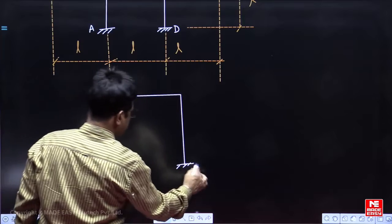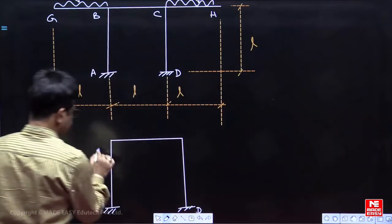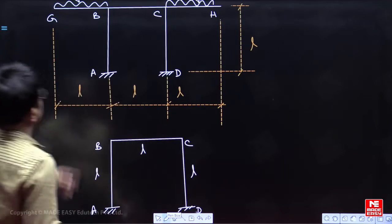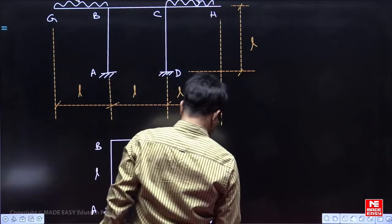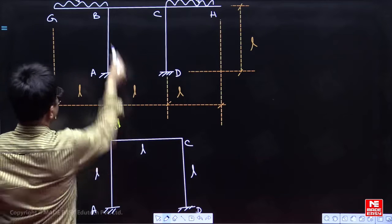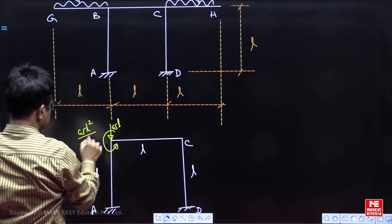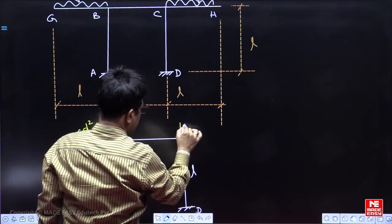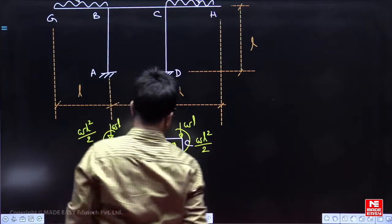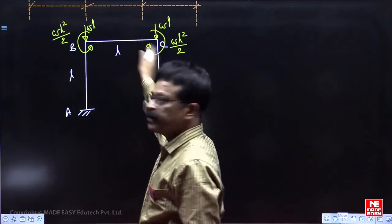This point let us say A, D, B, C. Length of the members are L and L. Now, when I remove this member GB, the load will come here like this. Load is WL and moment is WL square by 2. Here also if I remove this one, the load is WL square by 2. This is our frame, the entire frame we have converted into a portal frame.